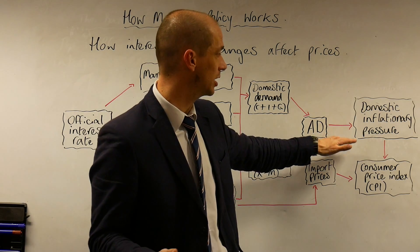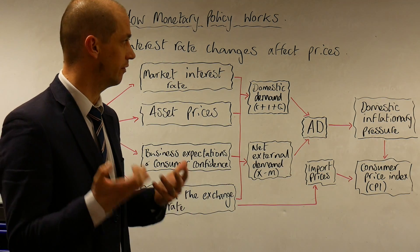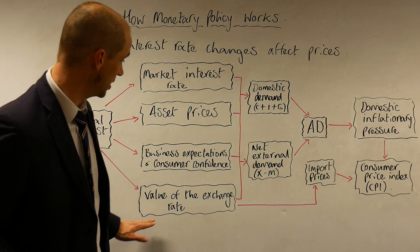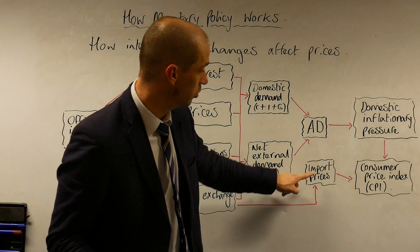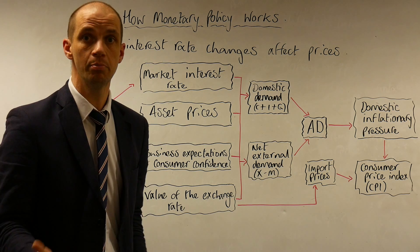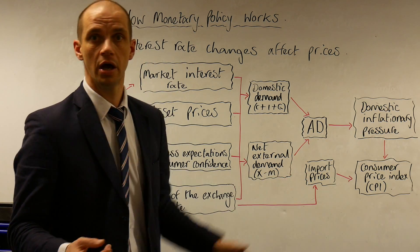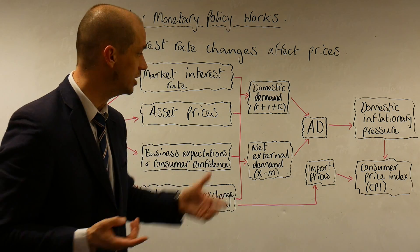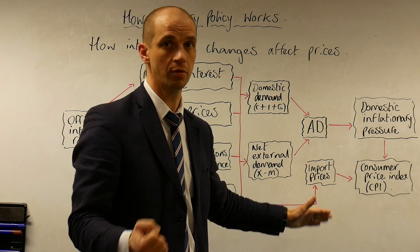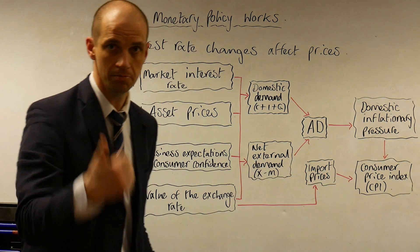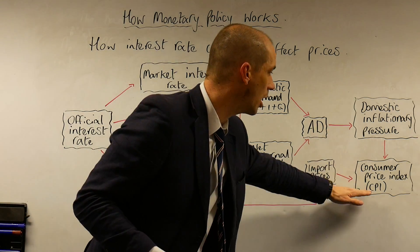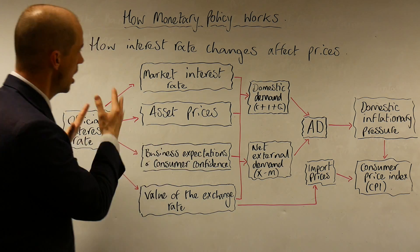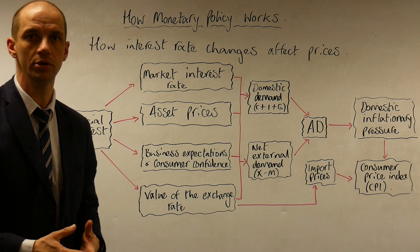That aggregate demand will have a direct implication for domestic demand-pull inflationary factors and inflationary pressures that affect the CPI as a whole. In addition, the value of the exchange rate will directly correlate to the price of imports and cost-push inflation — or alternatively, importing deflationary pressures from abroad. A stronger currency makes imports cheaper, and this will again feed through to the CPI level as a whole.